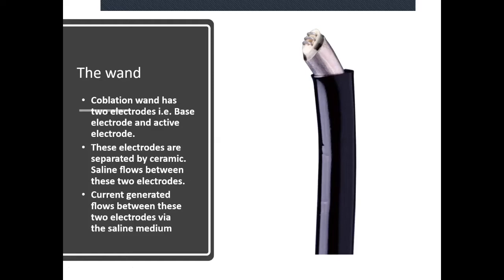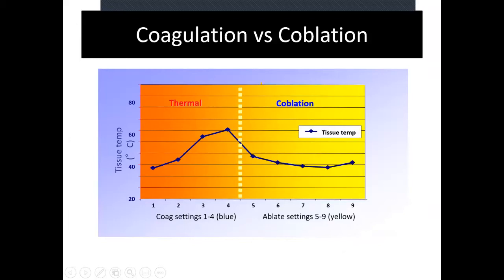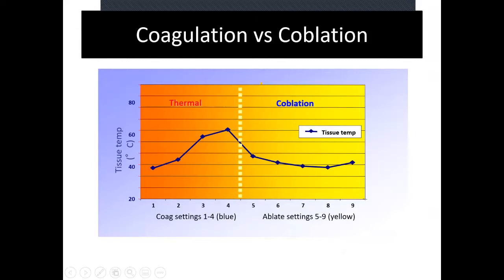There are two modes: ablation mode and coagulation mode. Always use ablation mode — don't try to use coagulation mode for ablating. If you look at thermal damage: in coagulation mode the temperature is much higher, while in ablation mode the temperature is much lower. This affects the depth of the lesion created.